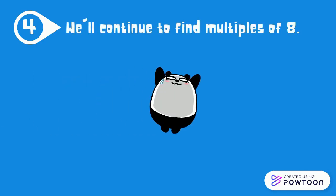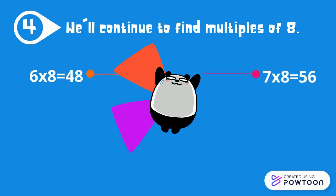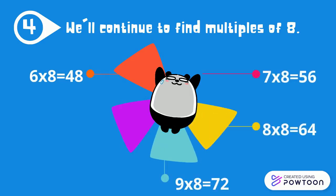We'll continue to find multiples of 8. 6 times 8 is 48. 7 times 8 is 56. 8 times 8 is 64. 9 times 8 is 72. 10 times 8 is 80.